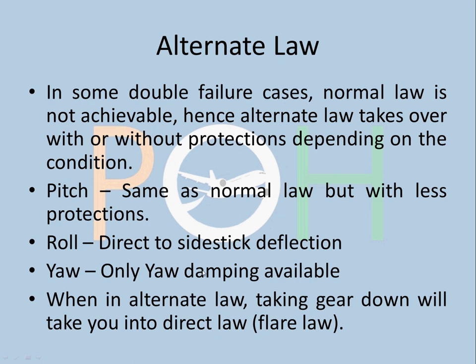Now let's talk about alternate law. Normal law is very simple to fly — it is next to autopilot. In some double failure cases, when normal law is not achievable, alternate law takes over with or without protections depending on conditions. In alternate law, pitch behavior is the same as normal law but with fewer protections. Roll is direct to side stick deflection — you have to hold the bank to maintain it; if you want a 20-degree bank, you must hold it there, unlike normal law where you can release the side stick.